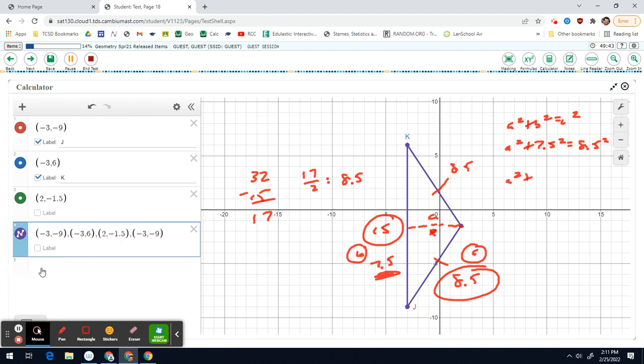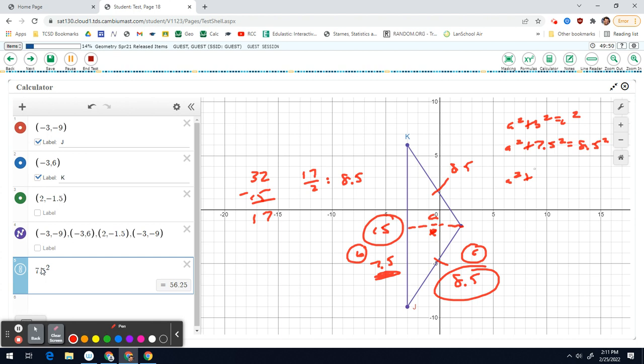Okay, we'll do A squared plus, in my calculator here, let me make that go away. Let's do 7.5 squared. That's 56.25.